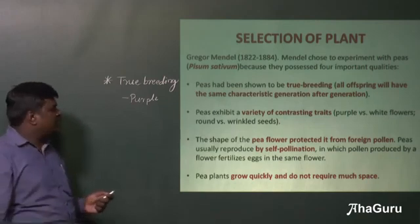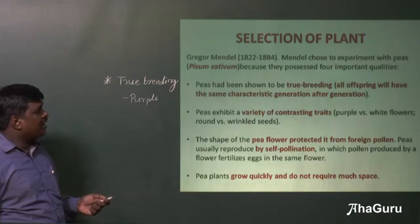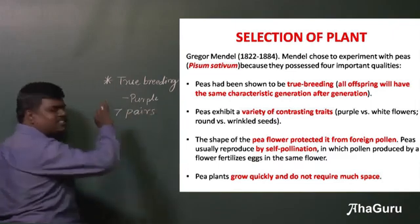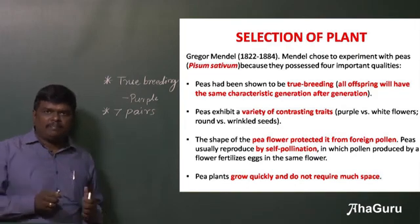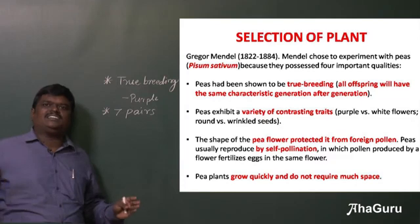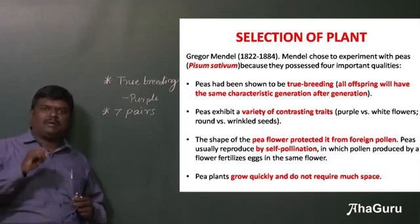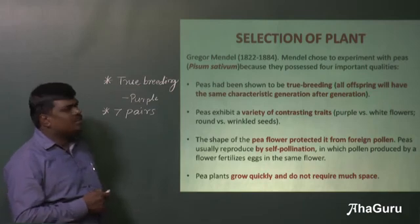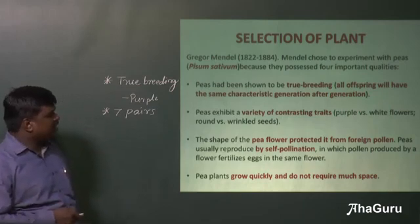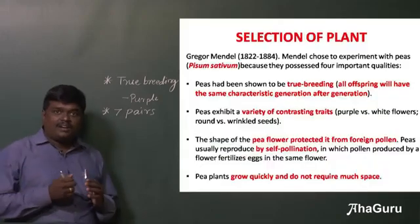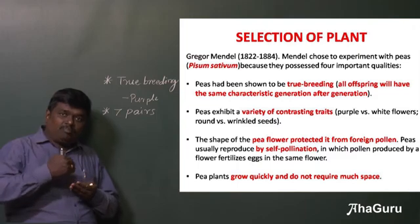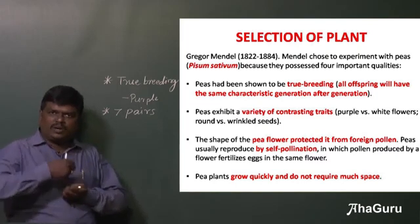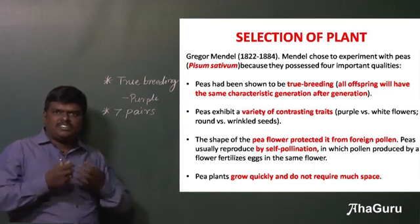The second reason is that Pisum sativum shows a variety of contrasting traits — seven pairs of contrasting characteristics. For example, purple flower and white flower — these are contrasting pairs. The third reason is that it is a self-pollinating flower. The anther produces pollen grains, and those pollen grains fertilize only the gynoecium of the same plant, meaning the transfer takes place within the same flower. That is why it is called self-pollination.